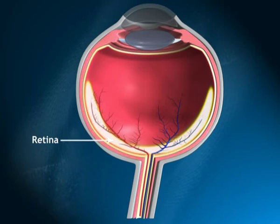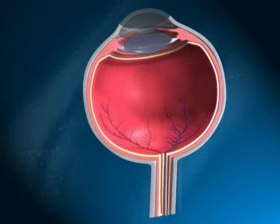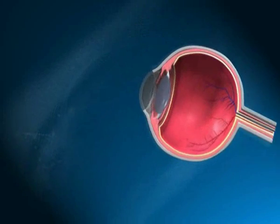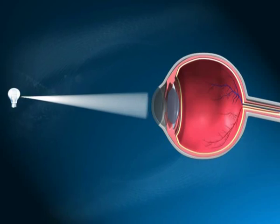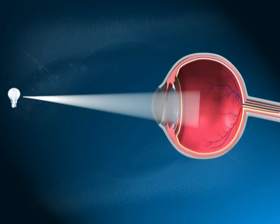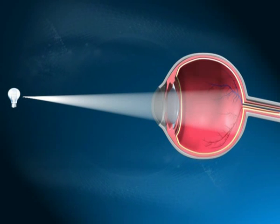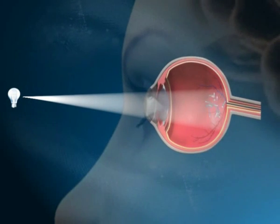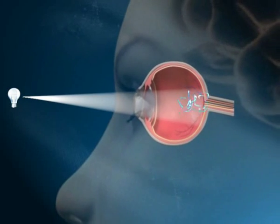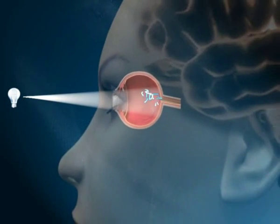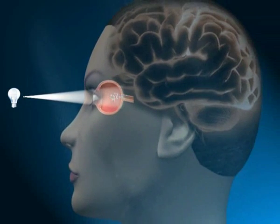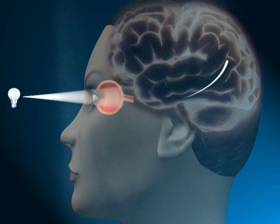The back of the eye is called the retina. Light enters the eye through the cornea and is focused onto the retina. The retina changes light signals into electric signals. These electric signals are sent through the optic nerve to the brain.